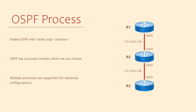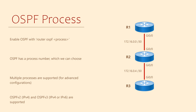There are two versions of OSPF we can use: Version 2 and Version 3. Version 2 is still the most common, but it only supports IPv4. If you want to use IPv6, which we'll cover in a different video, you need OSPFv3.